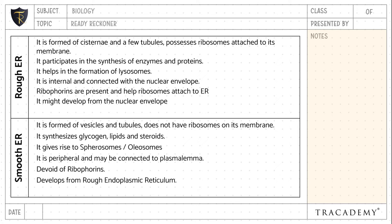Rough endoplasmic reticulum provides proteins and lipids for the Golgi apparatus. Whereas smooth endoplasmic reticulum provides vesicles for the cis phase of the Golgi apparatus.